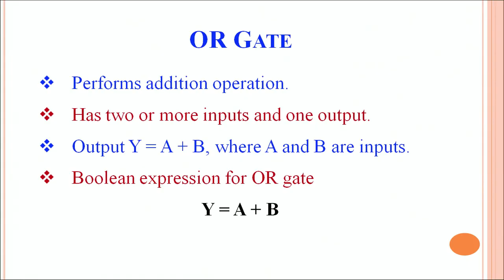The Boolean expression for the OR gate is given as Y equals A plus B. An OR gate performs an addition operation, which means that with two or more inputs and one output, the output will always be represented as Y equals A plus B.